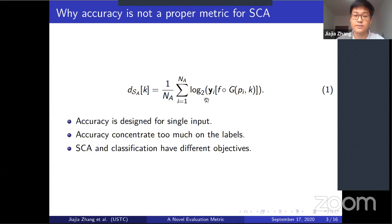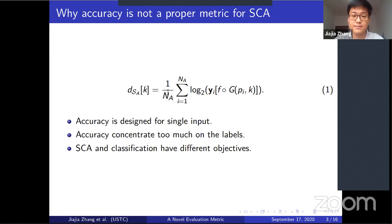Deep learning accuracy is not suitable for side channel analysis because it is designed for single prediction performance. In profiling attacks, a set of traces generated with the same key is given, and accuracy focuses too much on labels, conflicting with the objectives of the attack. A new deep learning metric is needed.